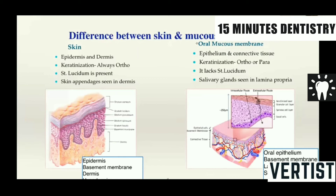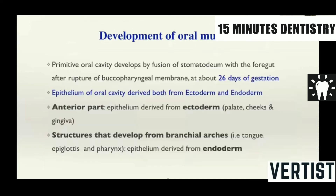There are some differences between the skin and the mucous membrane. Skin has stratum lucidum. It is always orthokeratinized and it has the skin appendages, and the structures are formed as epidermis and dermis. Whereas in the oral mucous membrane, it may be either orthokeratinized or parakeratinized. It lacks stratum lucidum and salivary glands are seen in the lamina propria. The development of the oral mucous membrane begins when the primitive oral cavity fuses with that of the stomodeum, and there is rupture of the buccopharyngeal membrane.